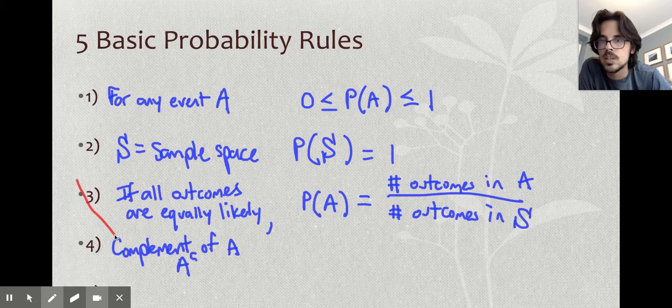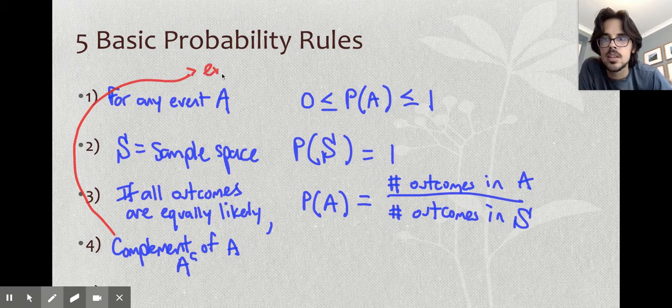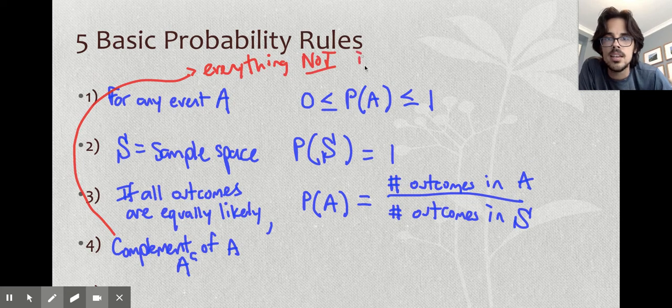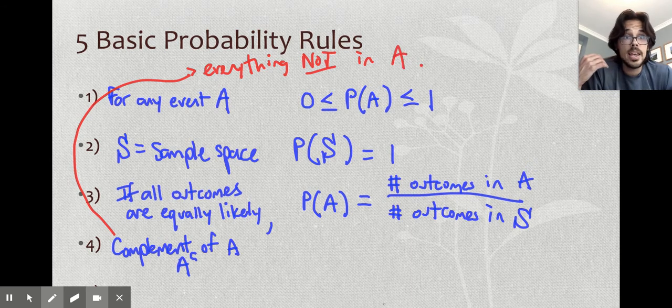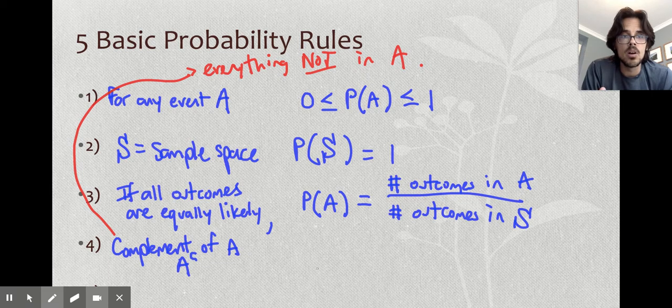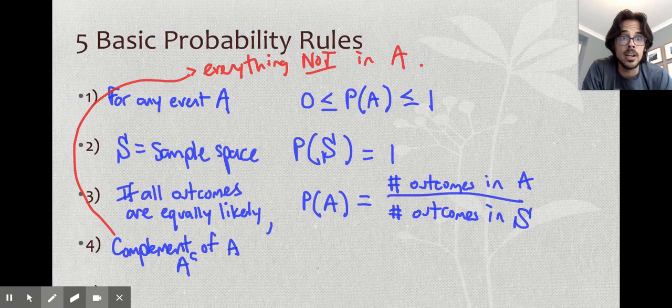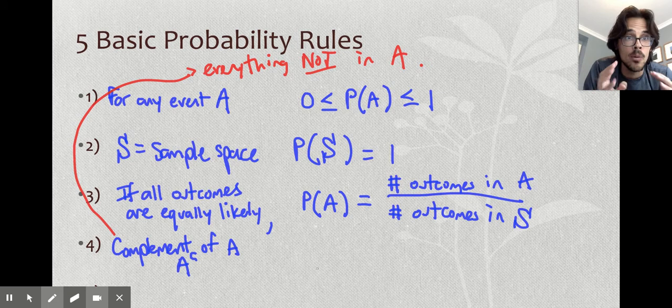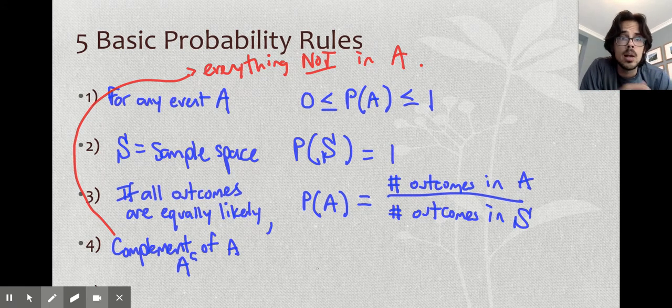Let's say my event A is raining. I want to find the probability it's going to rain tomorrow. The complement would be everything not in A. So everything that's not raining: snowing, foggy, sunny, tornado, whatever else, as long as it's not rain, that would be the complement. So instead of listing out all that stuff, it's easier just to say not A sometimes.